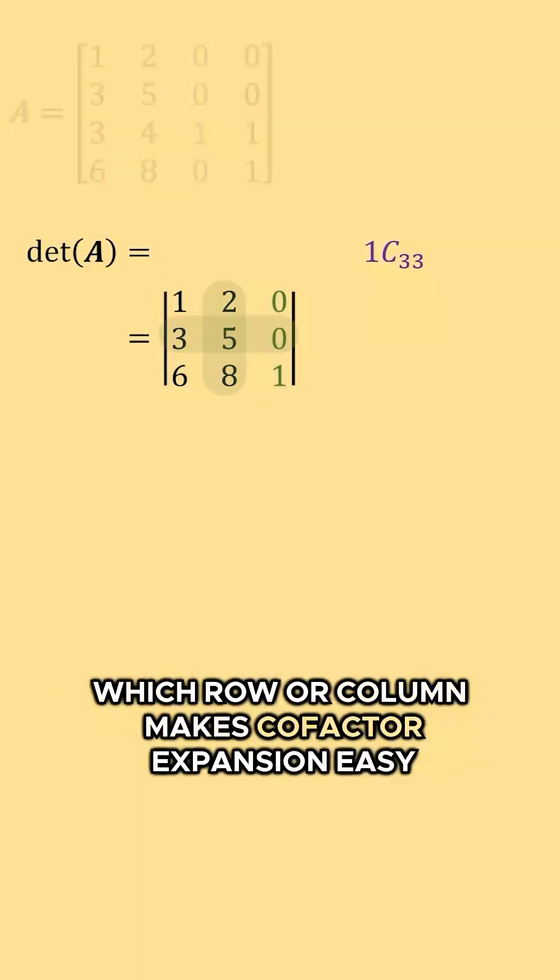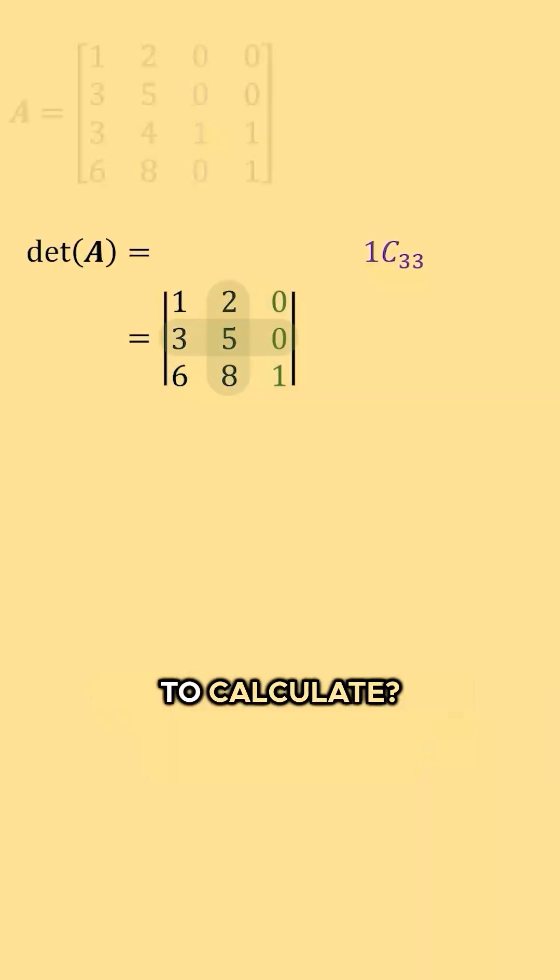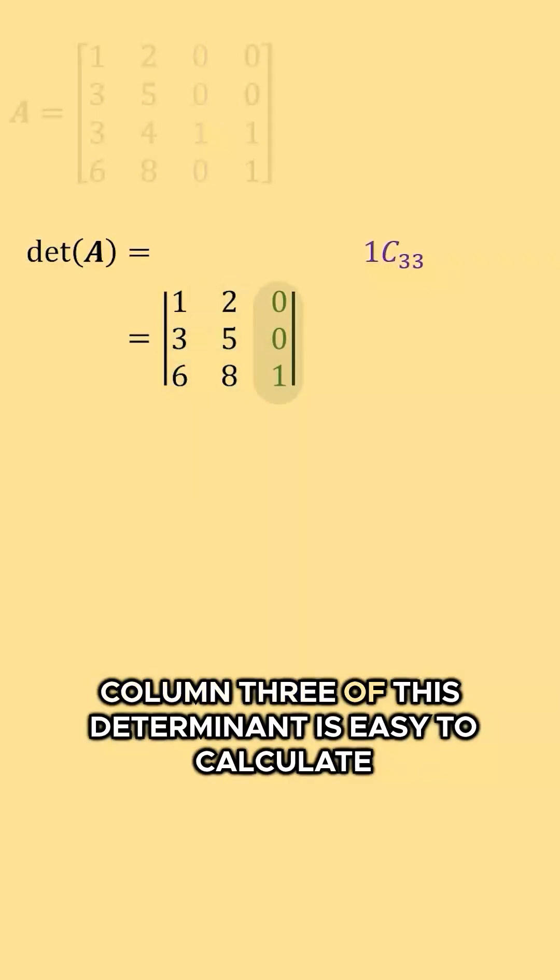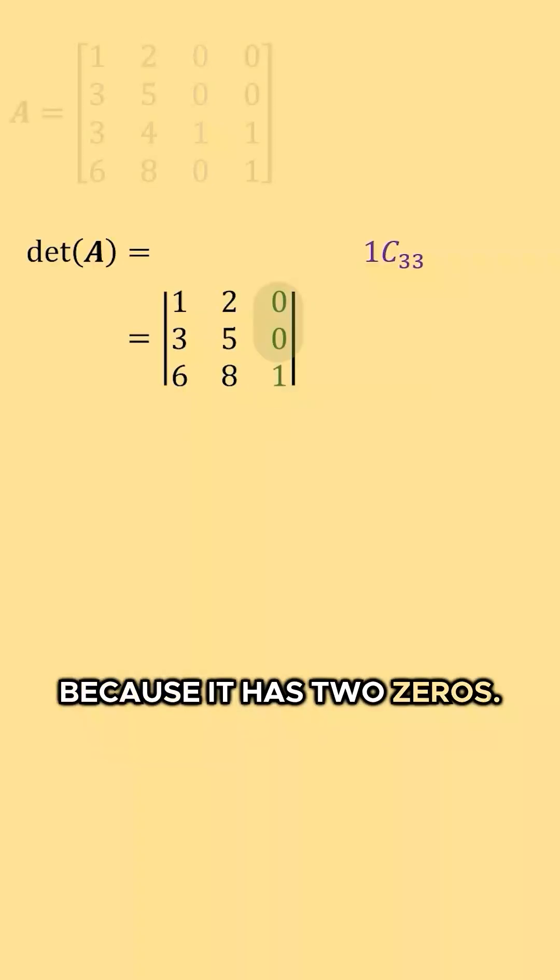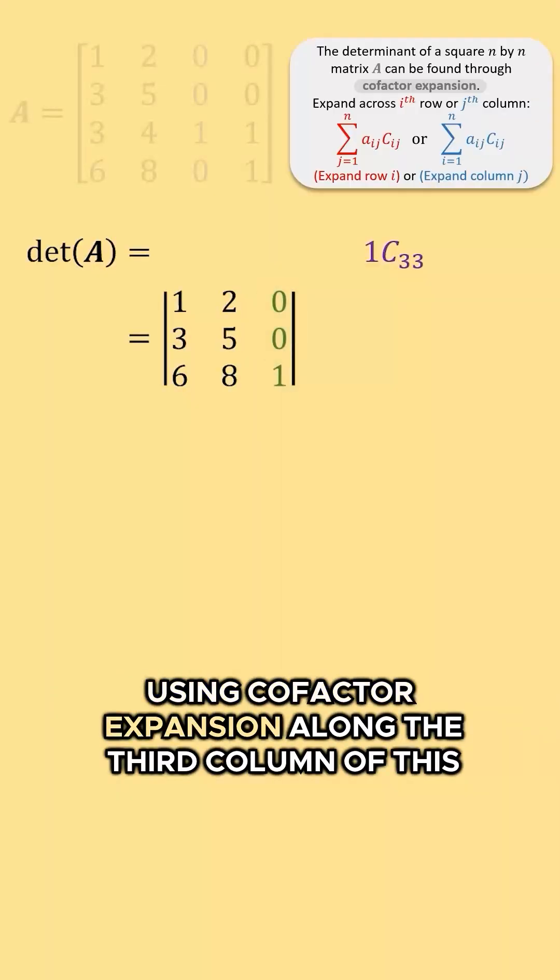Which row or column makes cofactor expansion easy to calculate? Well, column 3 of this determinant is easy to calculate because it has two zeros. Using cofactor expansion along the third column of this determinant,